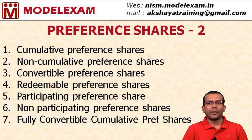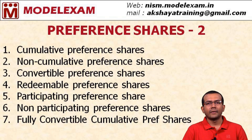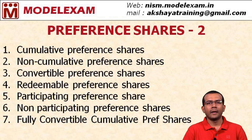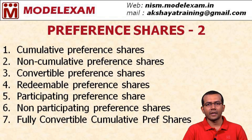The fifth type is participating preference shares. Normally preference shareholders get a fixed rate or fixed percentage of dividend throughout the duration of the preference share. However, if the company makes a huge profit, the participating preference shareholders might also get a share of that excess profit — that is, the excess profit over and above the dividend already paid to equity and preference shareholders. So after the standard fixed-rate payment is made, if the company still has a lot of cash left, participating preference shareholders get a share of that excess profit.